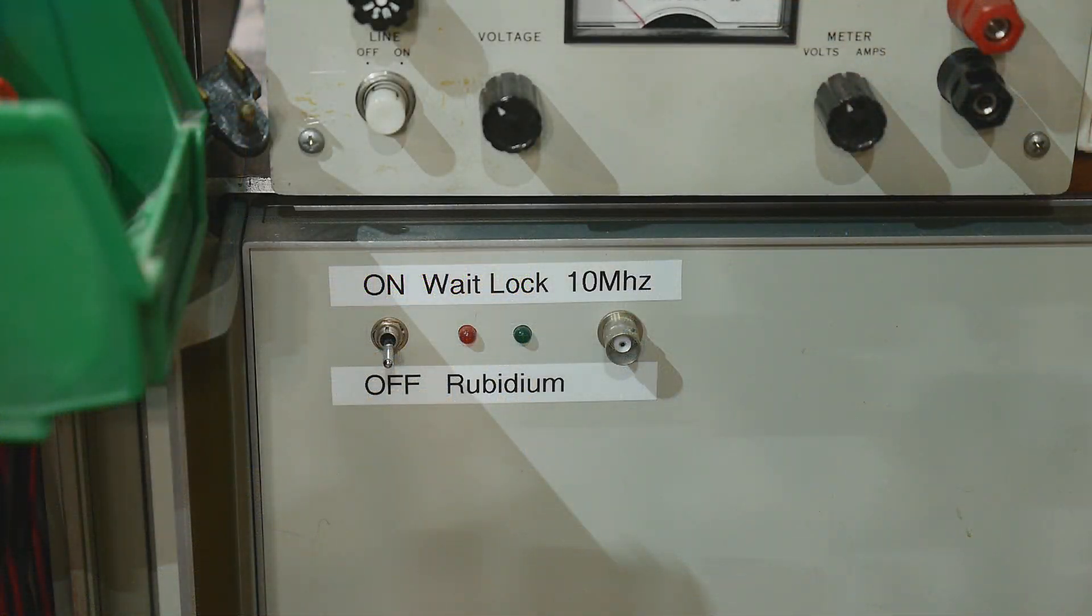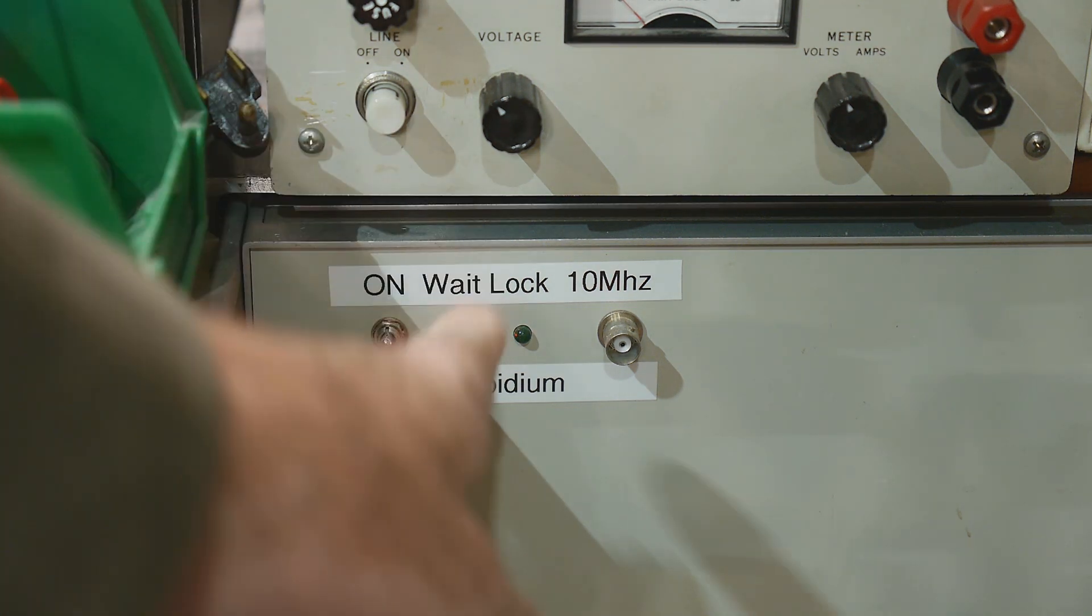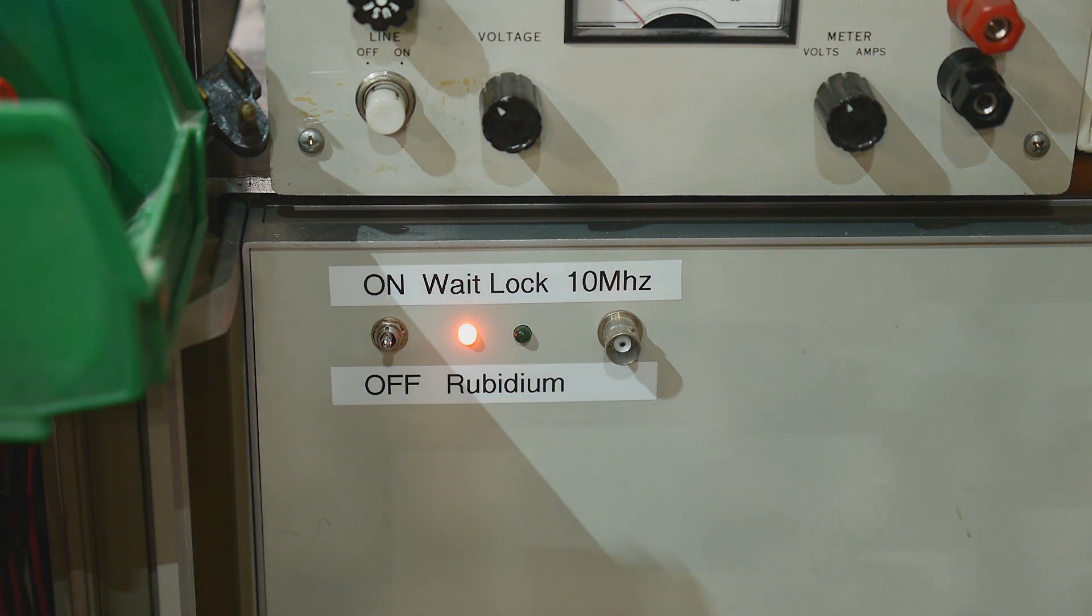Okay. Before I can turn on my frequency counter, I need to turn on my rubidium standard. So that takes a while to warm up. It is cold in the garage this morning. So we'll let that warm up. And when we get a green light, so the red light flashes, and then when it turns green, we'll be able to use the counter.